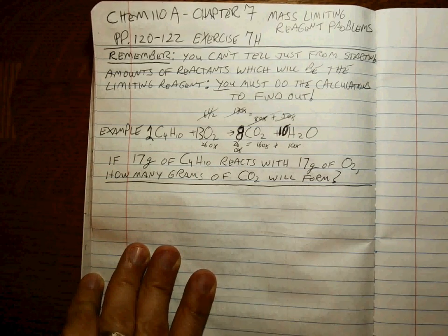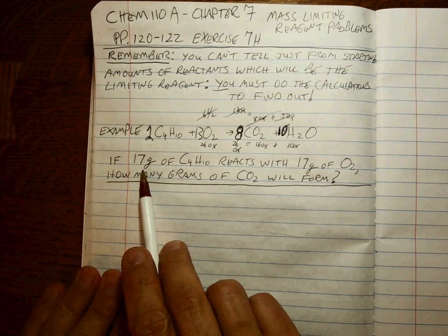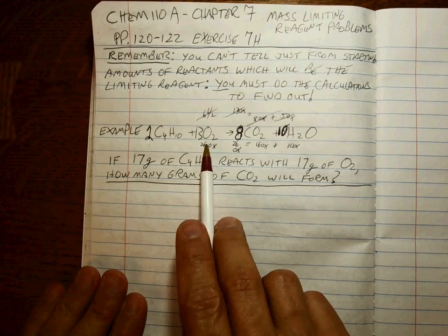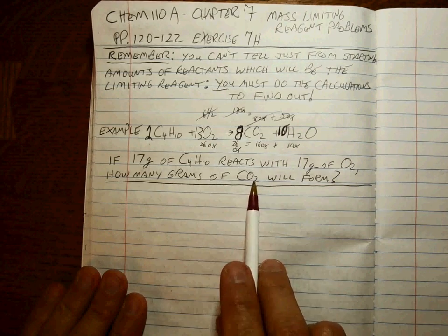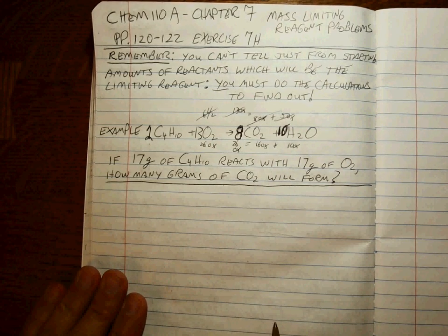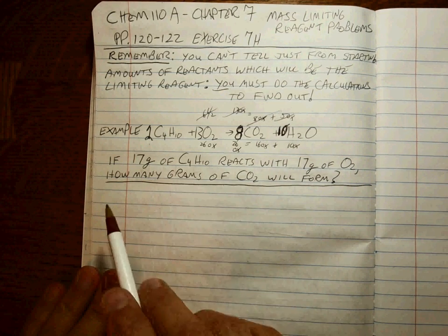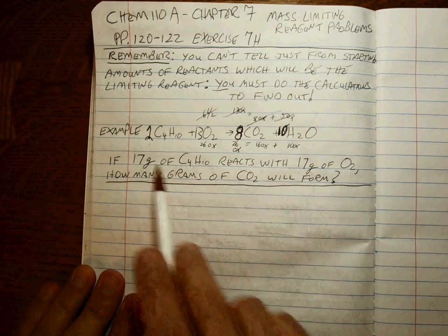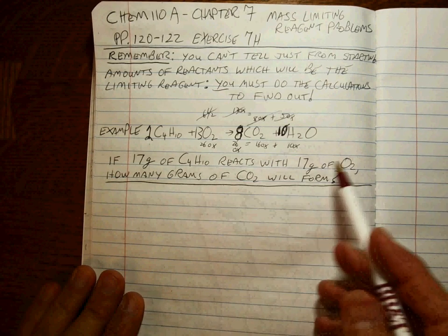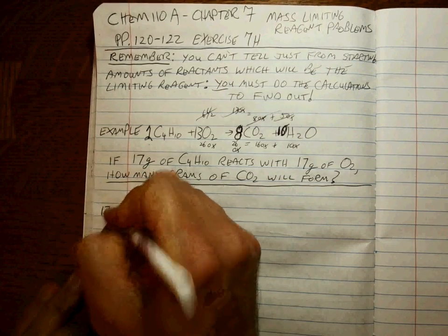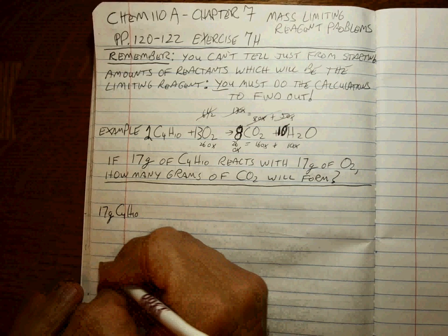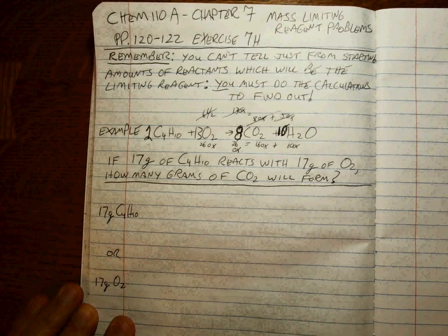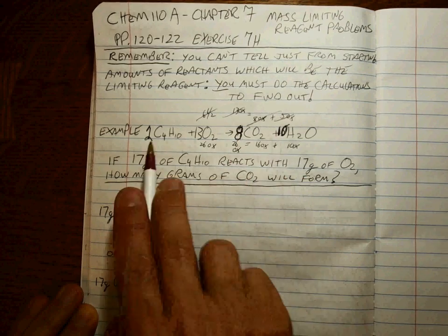To get 26 oxygens, this has to be 13. So the balanced ratio is 2 moles to 13 moles to 8 moles to 10 moles. This is a limiting reagent problem because you have some amount of each reactant, and you must decide which one gives the correct — smaller — amount of CO2. You can't guess just from the starting amounts since both are 17 grams.